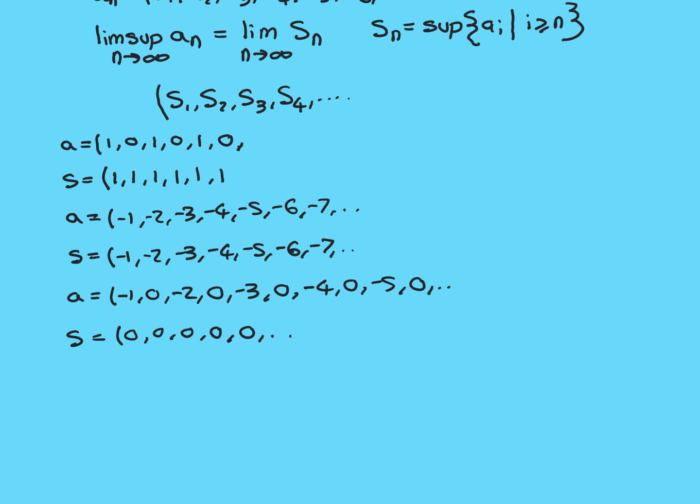So that's the main aim of this video — to show that whenever the limit superior exists, it is the maximum of the limit points of the sequence, and whenever the limit inferior exists, it is the minimum of the limit points of that sequence. For these two unbounded-below examples, the limit inferior isn't going to exist. For the alternating zero sequence, the limit inferior does exist and it will be zero, as we'll see now.